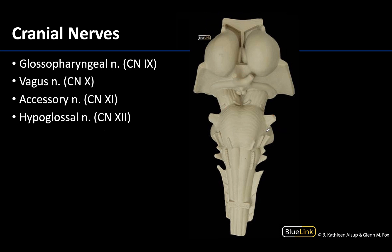Cranial nerves 9, 10, and 12 will originate on the medulla oblongata. The glossopharyngeal nerve is the more superiorly located, and vagus and glossopharyngeal are closely associated with one another, whereas the hypoglossal is more medially and inferiorly positioned. The accessory nerve — traditionally referred to as the spinal accessory — comes off the spinal cord, inferior to or distal to the medulla oblongata.